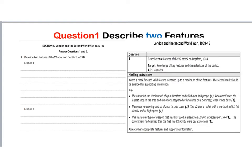For Feature 1, you could talk about the Deptford attack — for example, that it was an attack on a Woolworths and 160 people were killed. For Feature 2, you could discuss the V2 itself: it was a rocket with a warhead, they were silent and came down at high speed. Your second sentence could develop this by noting these weapons were used towards the end of the war and were very deadly.